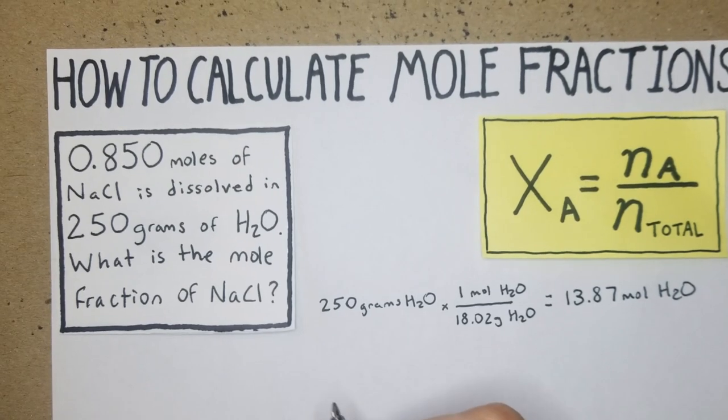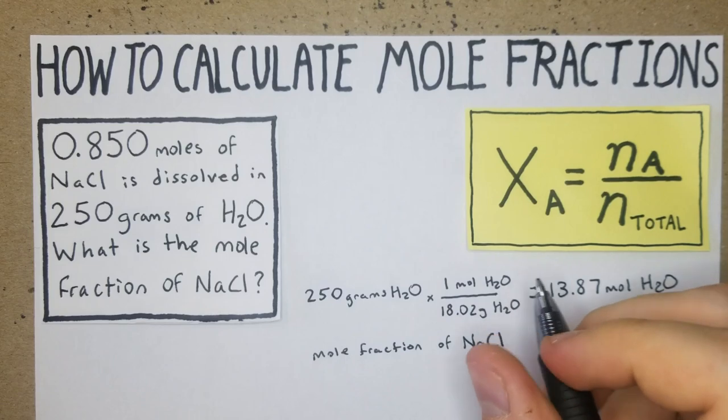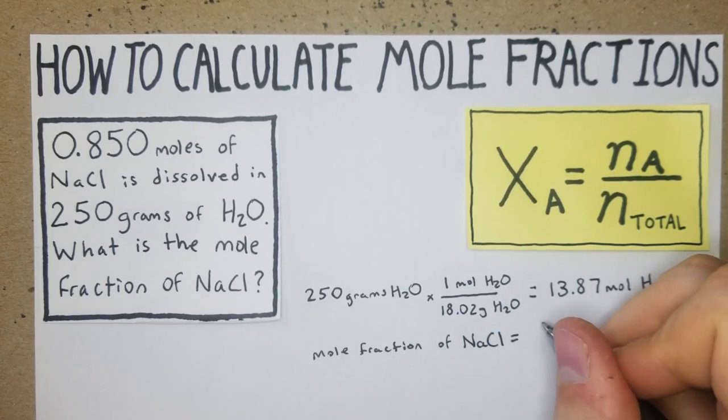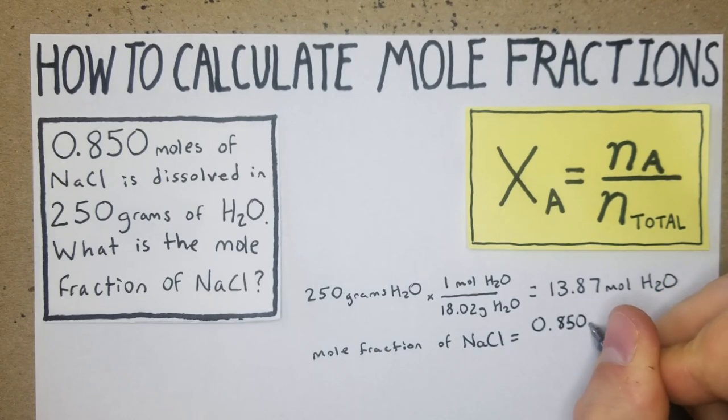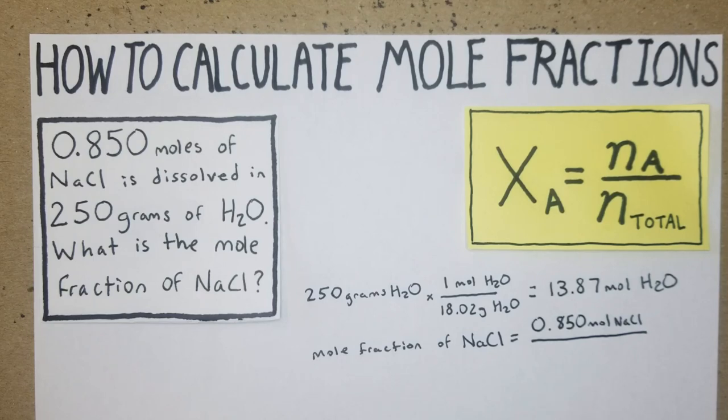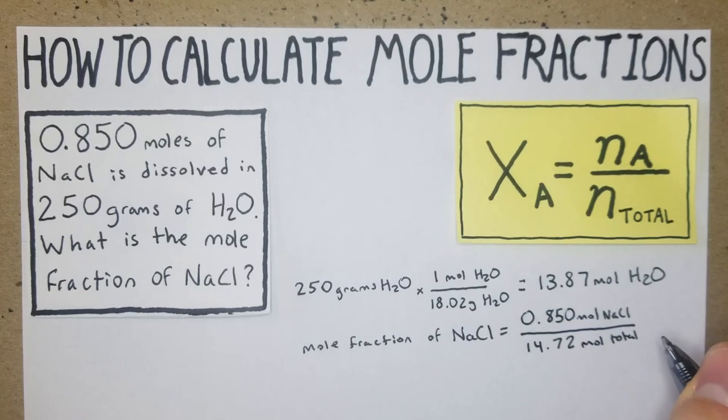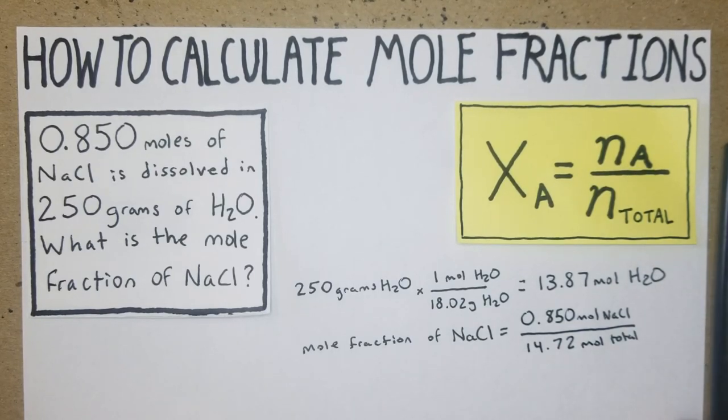So the mole fraction of NaCl is going to be 0.850 mole of NaCl per total moles. For our total, we have the moles of water plus our moles of solute, in this case NaCl. So we have 13.87 plus 0.85, which is 14.72 mole total or mole solution.